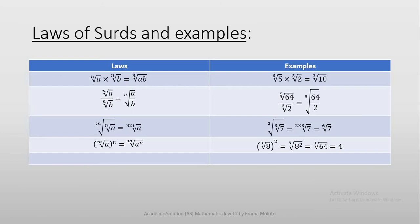As you can see on the screen, we have laws and their examples. Number one, we have the nth root of a multiplied by the nth root of b, which is equals to the nth root of a multiplied by b. Since we have the same root, we multiply what's inside the root — that's why we end up with the nth root of a times b. For example, the cube root of 5 multiplied by the cube root of 2 gives us the cube root of 10.